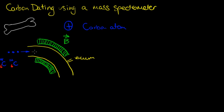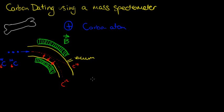We fire these carbon atoms through the magnetic field. Depending on which isotope we're looking at — carbon-12 or carbon-14 — each follows a different path. Carbon-14 has a slightly larger mass, so its path is not deflected by the magnetic field as much as carbon-12. The lower mass of carbon-12 means the acceleration at right angles to the magnetic field is greater at every point, so carbon-12 curves more than carbon-14.